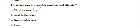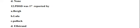Semi-tropical means it requires some cold weather or cool climate for its growth and productivity. Question number 12: PDST was first reported by — options are Berg, option B Lulla, option C Fallock, and option D L-strand. The right answer is Berg, reported in 1959.